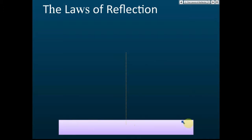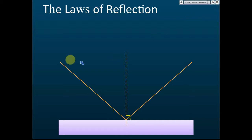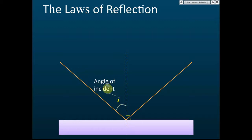Consider a mirror with a point of reflection. A line drawn perpendicular to the mirror — at 90 degrees — is called the normal. A light ray hitting this point is called the incident ray, and after reflecting it becomes the reflected ray. The angle between the incident ray and the normal is called the angle of incidence. The angle between the normal and the reflected ray is called the angle of reflection. All angles must always be measured from the normal — not from the mirror surface itself.